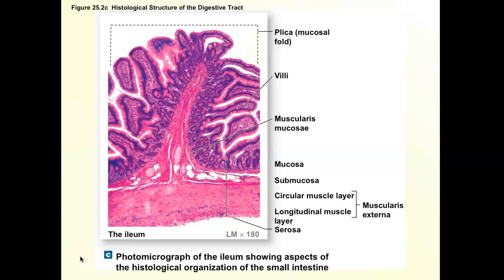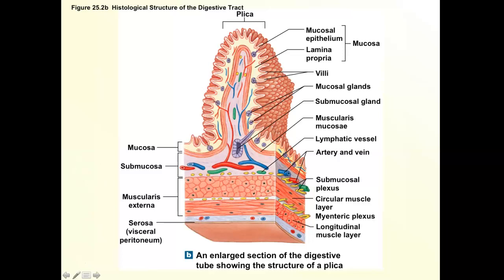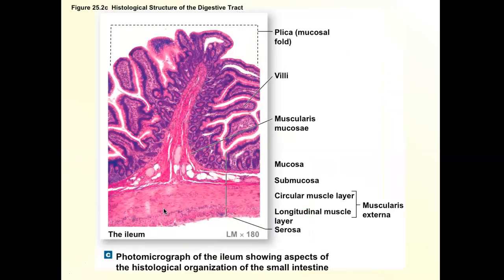You're going to want to be able to recognize the histology slide of small intestine as well as large intestine — there are ways to tell the difference. We're looking at small intestine right here. You're going to want to be able to identify all four layers of the digestive tract: mucosa, submucosa, muscularis externa, and serosa, as well as their sub-parts.